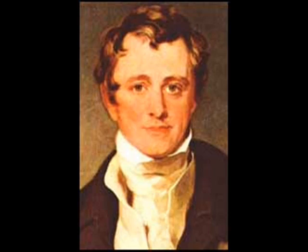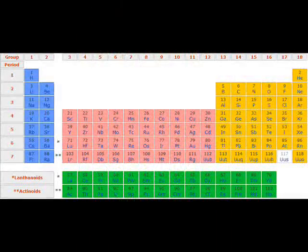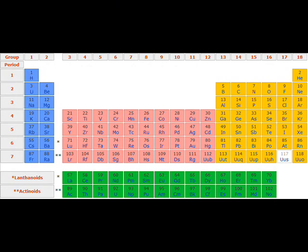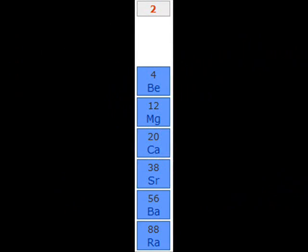Sir Humphrey Davy discovered calcium in 1808. The chemical symbol for calcium is Ca. Its atomic mass is 40.1. It's in period 4, group 2, and is a member of the alkali earth metal family.